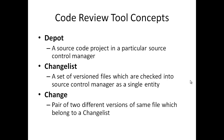A depot is a project in a particular source control manager. Change lists, also sometimes called change sets, are a set of versioned files checked into the source control manager as a single entity. A change is a pair of two different versions of a file which belong to a change list. A depot generally contains many change lists, and each change list can contain one or more changes. A review contains one or more change lists to be reviewed.